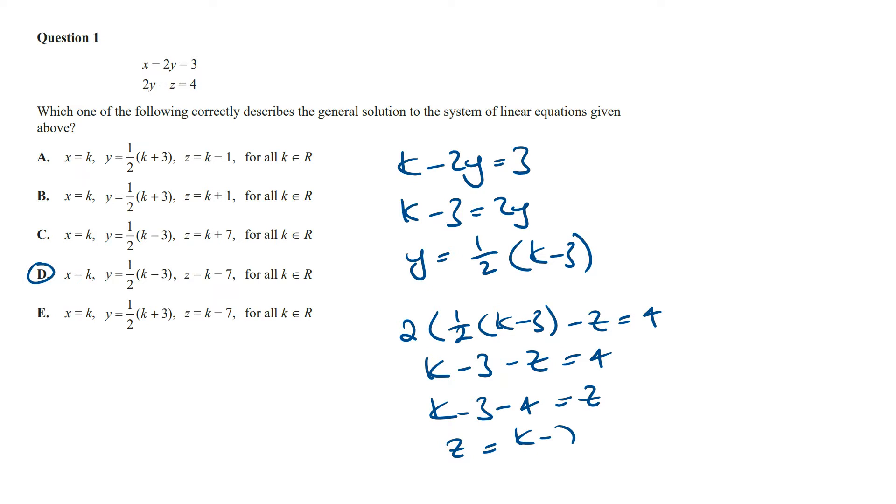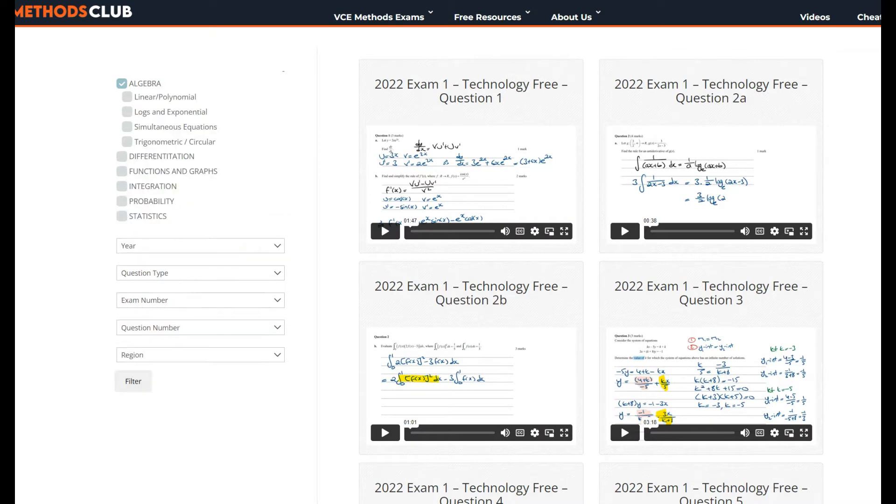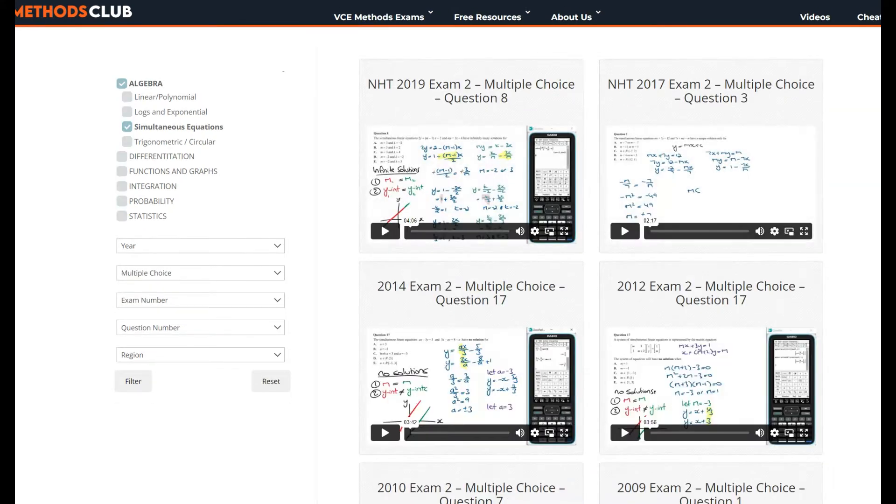then join the Maths Methods Club where you can group past mathematics exam questions by topic. For simultaneous equations, click on Algebra from the main topics and then from the subtopics select Simultaneous Equations. Go to Question Type and then select Multiple Choice and then click on Filter. This is then going to instantly group all the past mathematics exam questions in the Multiple Choice section related to just simultaneous equations.